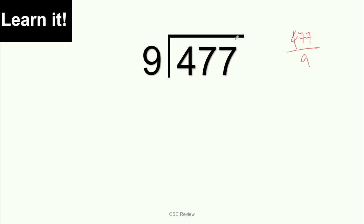When it comes to dividing like this, you have to think in terms of left to right — we're going to start from left to right, and take them one at a time. In this case, we look at 4 first. The problem with 4 is: 4 divided by 9 is not possible because 4 is smaller than 9. When that happens, you just move on to the next number. So instead of dividing 4 by 9, which doesn't work, you look at 47. Don't touch the remaining number yet — focus on 47 first.